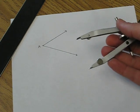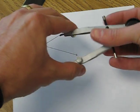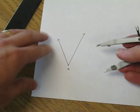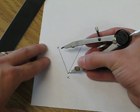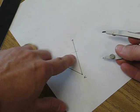The first step would be to use your compass, and with any radius of your compass, you need to mark an arc that passes through both sides of your angle. Alright?